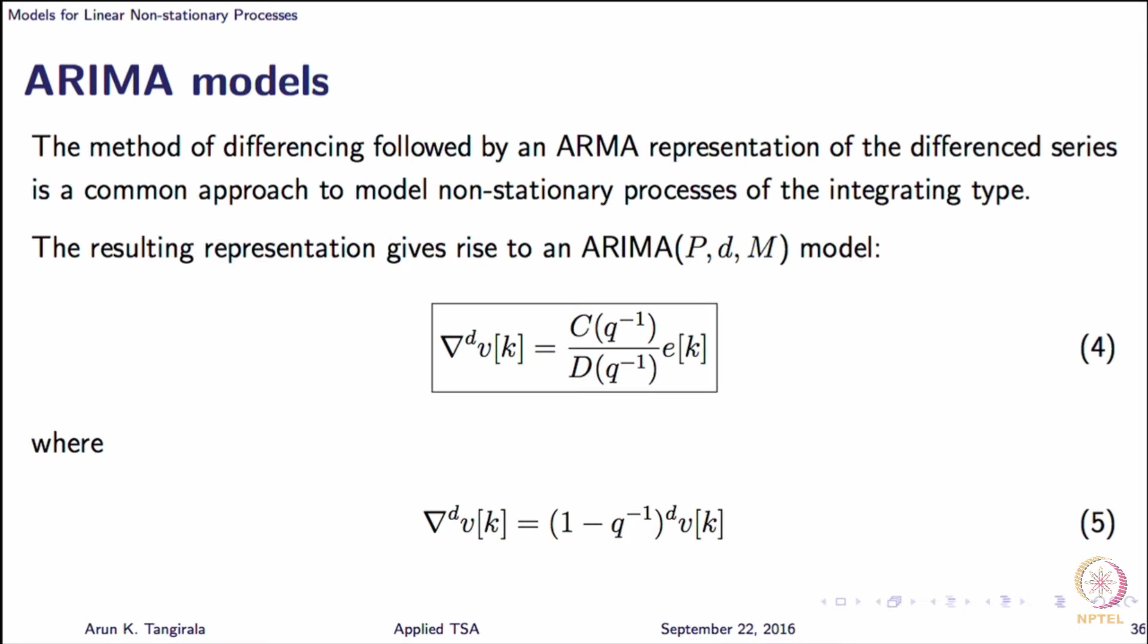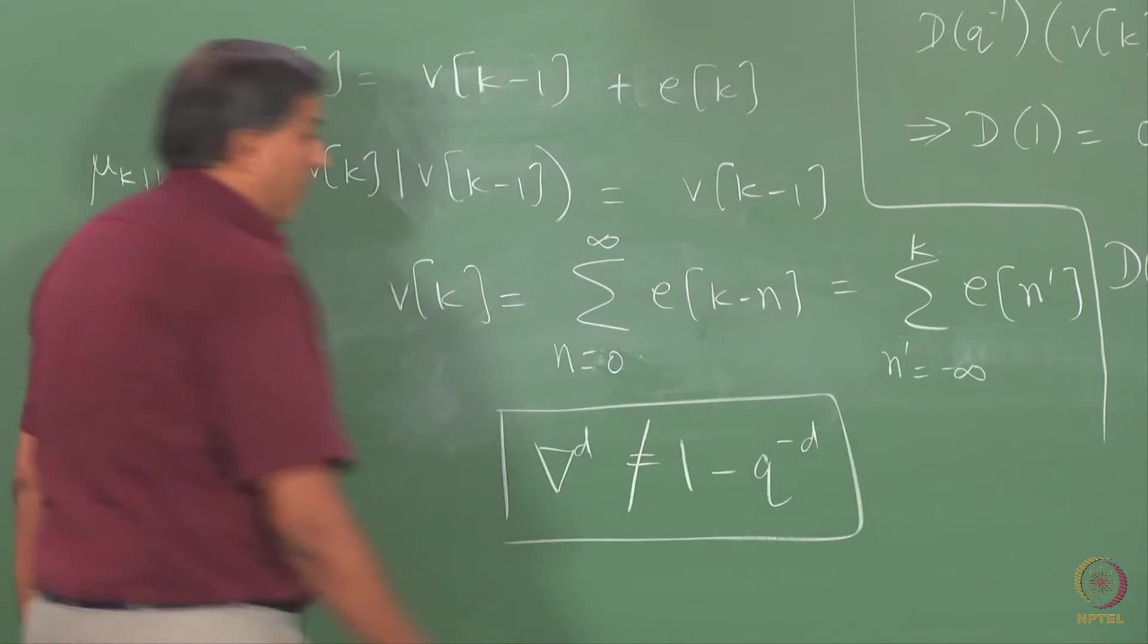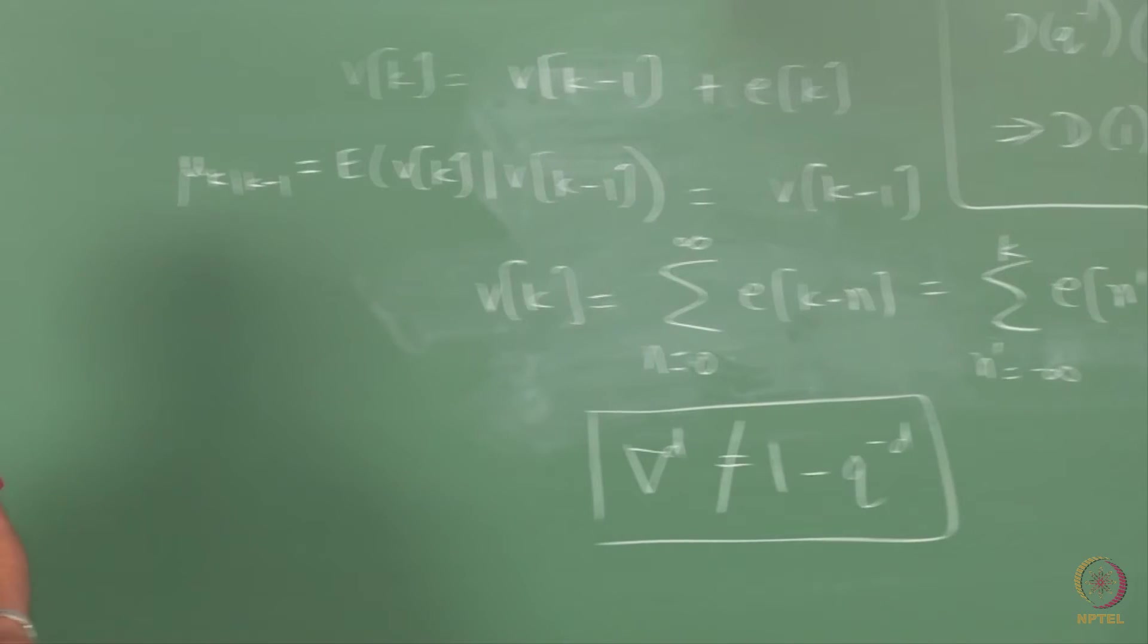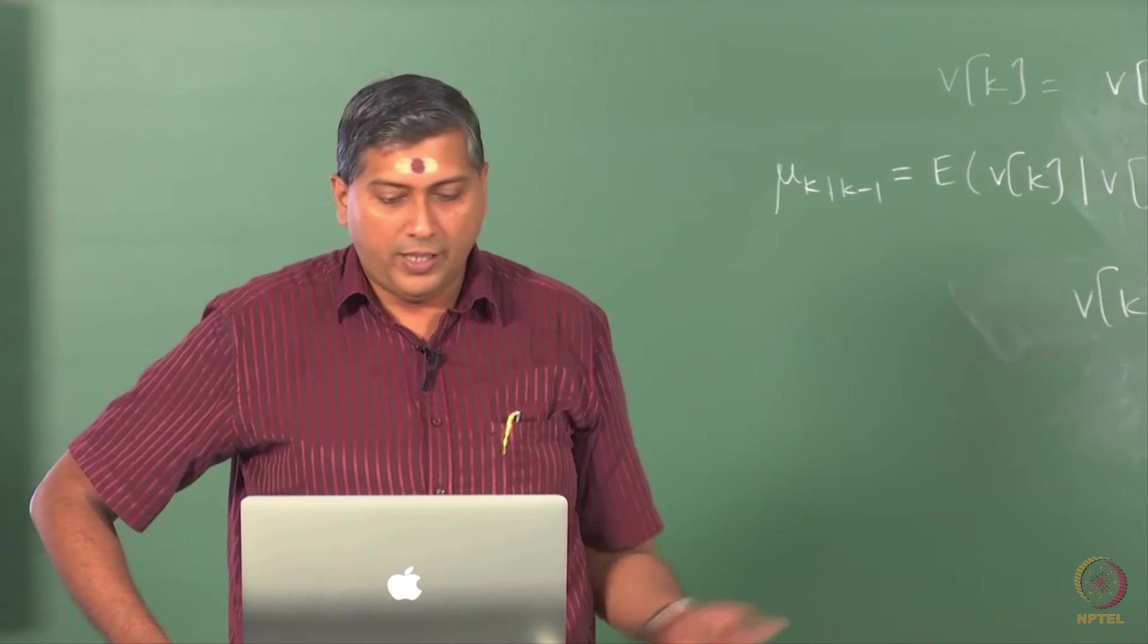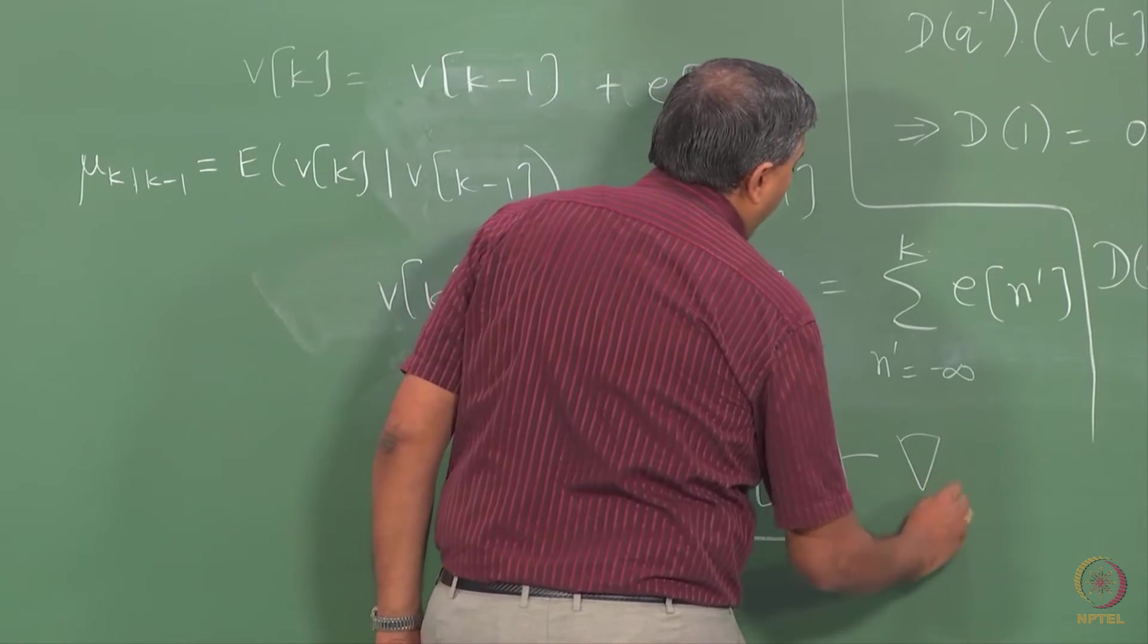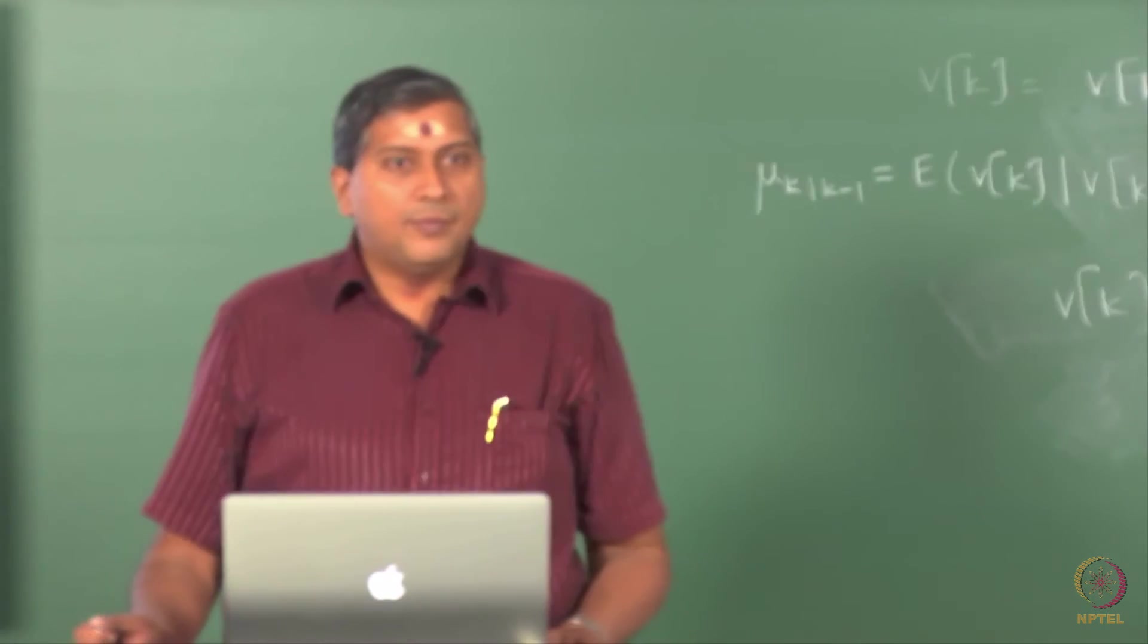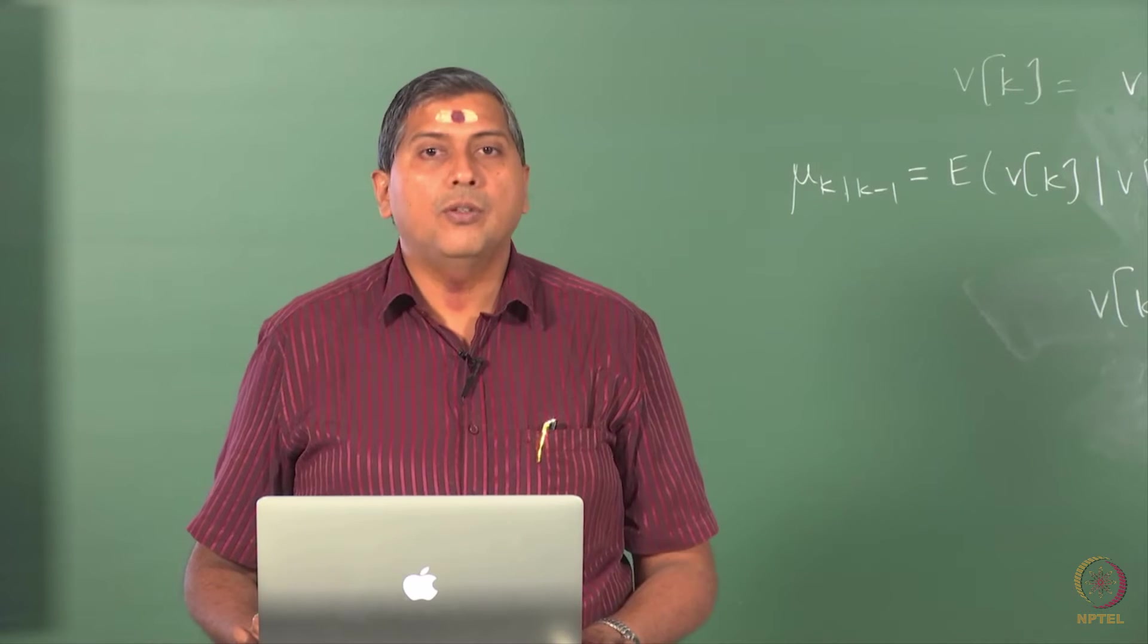And you should not confuse this nabla^D that I have used, nabla raised to D, with the other operator that we had seen earlier. Do not think that (1 minus Q inverse) raised to D is the same as 1 minus Q to the minus D. There are obviously two different operators. So be careful. Very often this 1 minus Q to the minus D is denoted as nabla subscript D, but again that depends on the author. This is general convention that is used. So these are your ARIMA models.